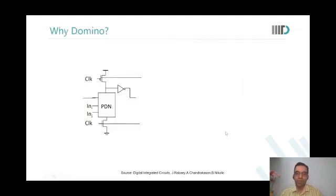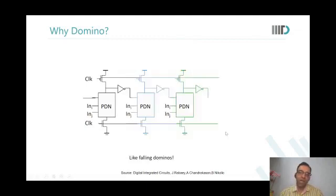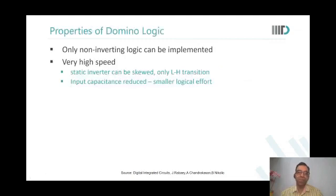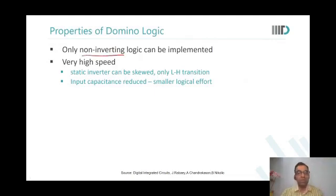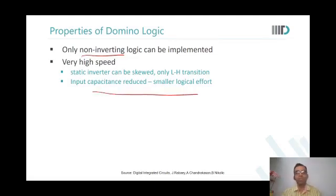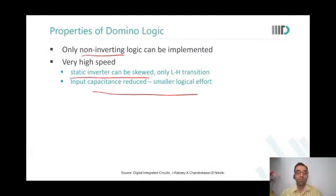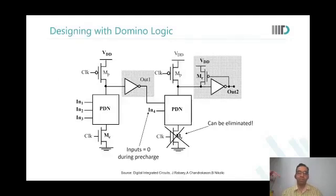Domino logic: only after the first stage is evaluated will the second evaluate, then the third and fourth. Properties of domino: only non-inverted logic can be implemented. Because it is dynamic gate-based, input capacitances are reduced, there is smaller logical effort, and it is much faster. The inverter can be skewed because only one transition — zero to one — is important; the other is irrelevant. So domino can be designed very fast.